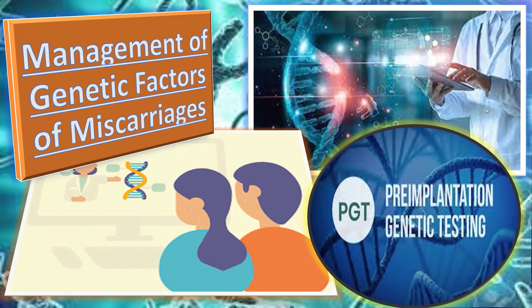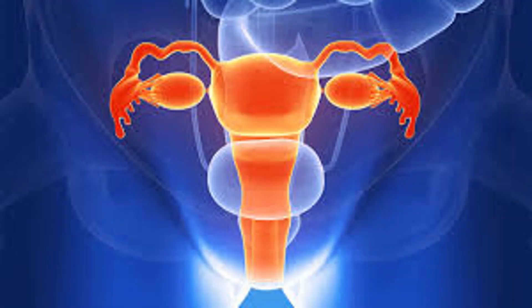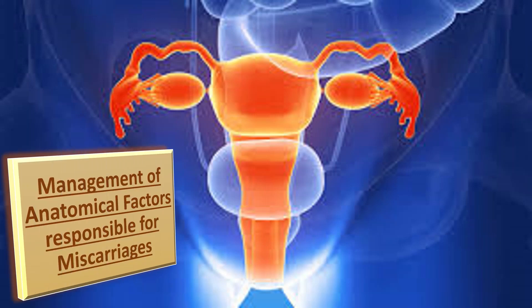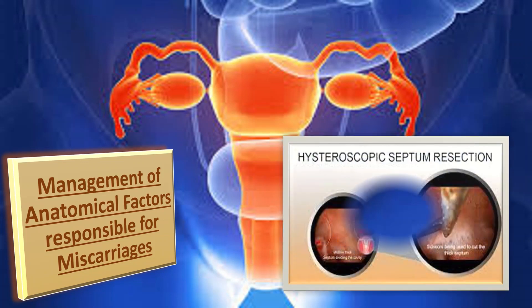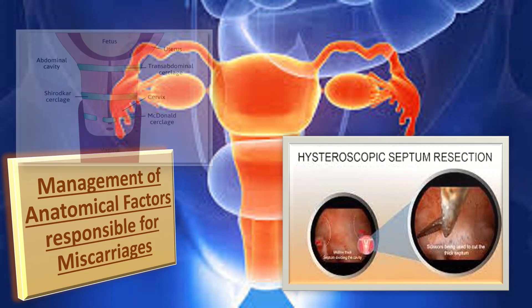Coming to the management of anatomical factors responsible for miscarriages: for congenital uterine malformations, there is insufficient evidence to assess the effects of uterine septum resection in women with recurrent miscarriages.